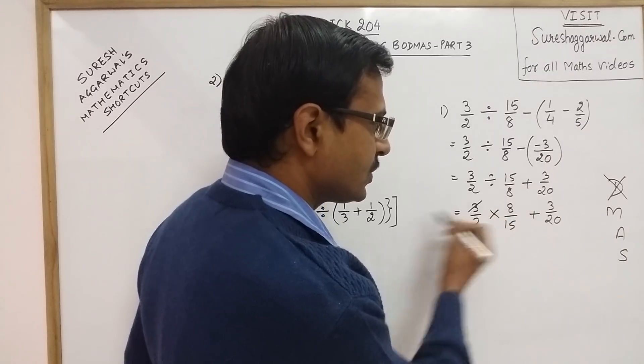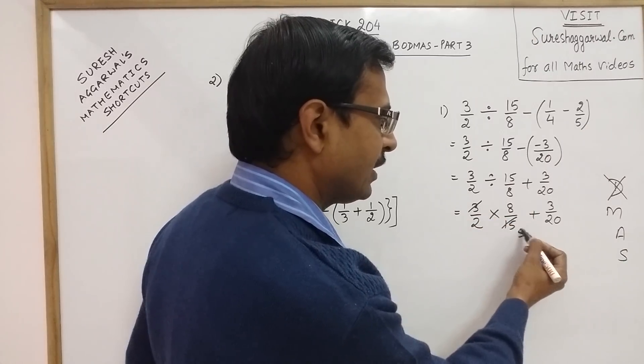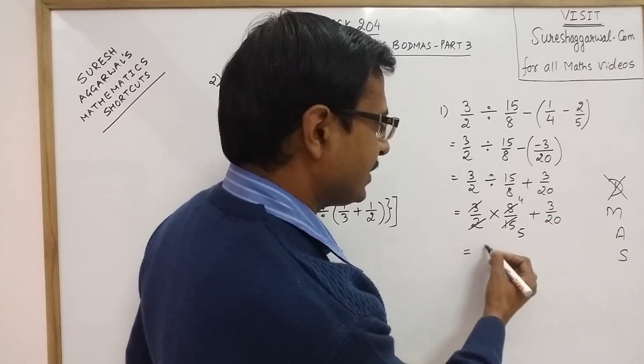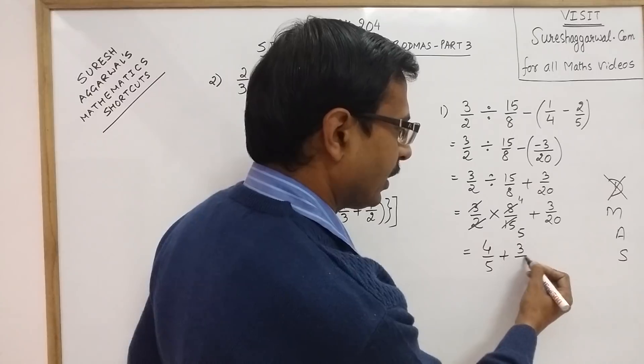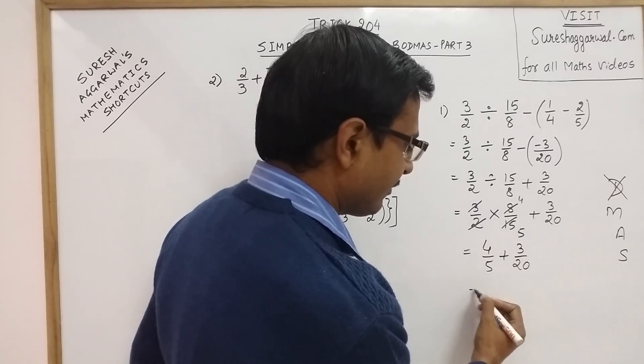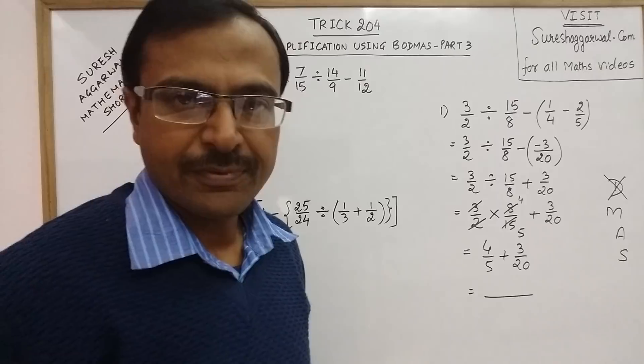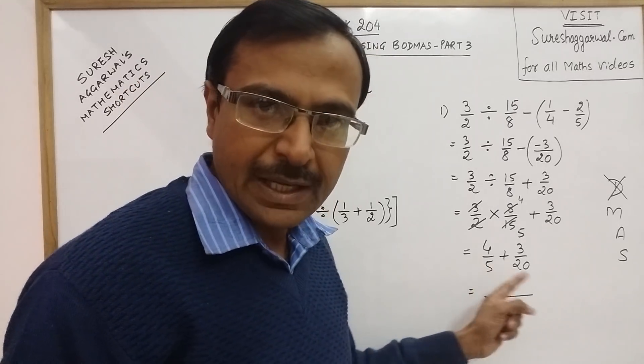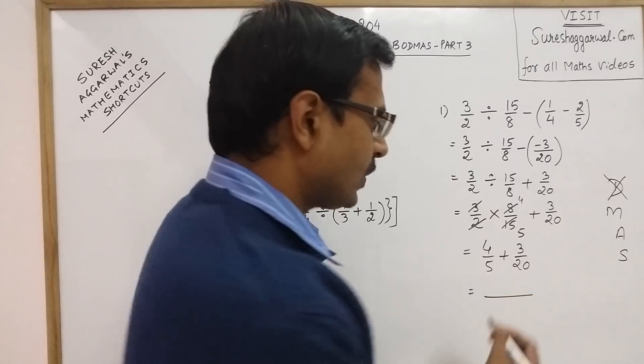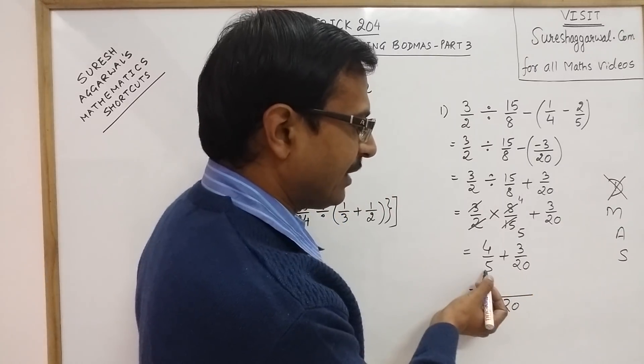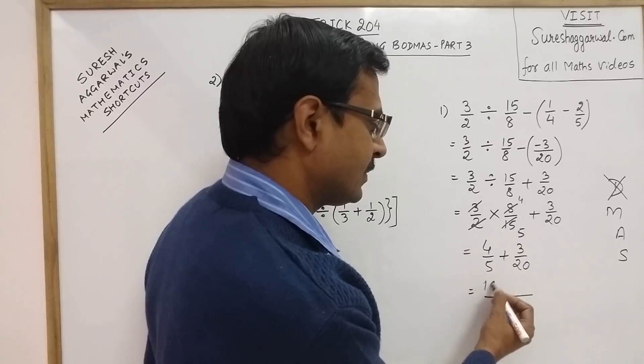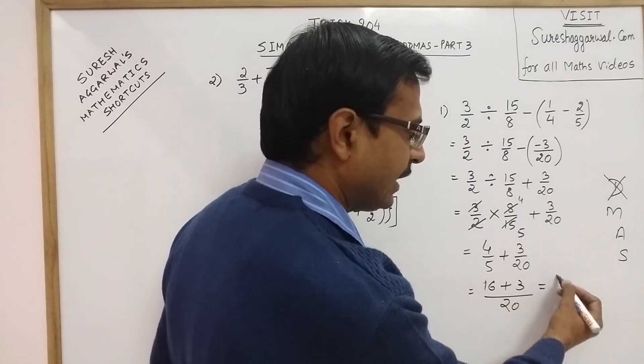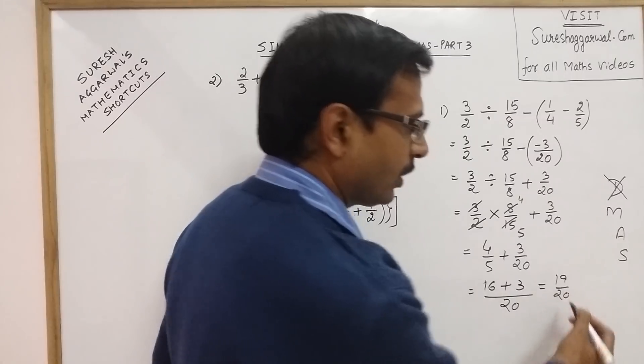If you multiply these two, 3 and 15 cancel to give 1 and 5, and 2 and 4 cancel to give 1 and 2. So you are left with just 4/5 plus 3/20, which can very easily be solved because 5 is a factor of 20. You just take 20 as LCM, and 20 divided by 5 is 4, 4 into 4 is 16, plus 3 directly. So your answer is 19/20.